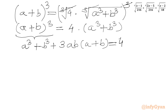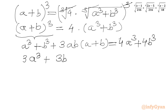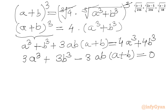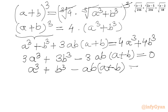Now we will take all terms to the RHS. So 4a cubed minus a cubed gives 3a cubed, and 4b cubed minus b cubed gives 3b cubed, and then minus 3 times ab times (a plus b) equals 0. The equation looks divisible by 3, giving us a cubed plus b cubed minus ab times (a plus b) equal to 0.